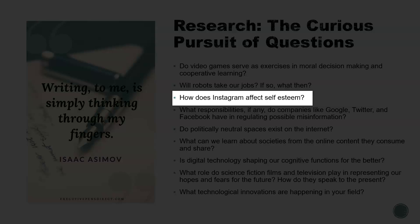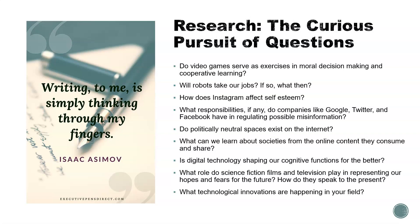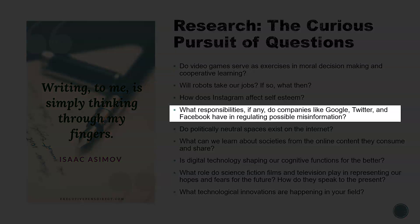When they see a depiction of someone's life that looks more exciting than theirs or something like that — this is something that psychologists and educators have studied and you would actually find quite a bit of research on. We might also ask ourselves, when it comes to thinking about big internet websites and social media, what responsibilities, if any, do companies like Google, Twitter, and Facebook have in regulating possible misinformation.